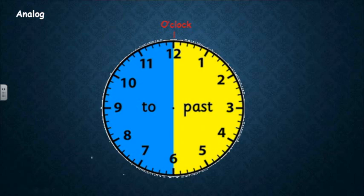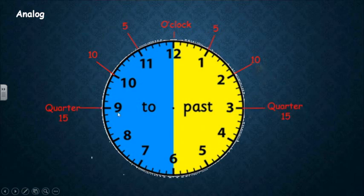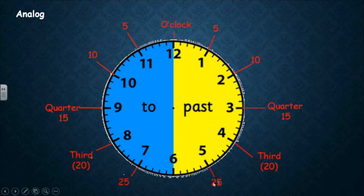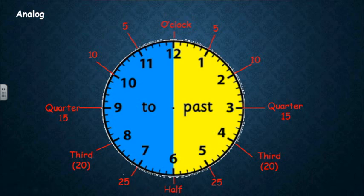Minutes in the analog clock looks like a mirror. The minutes on one and eleven is five minutes. The minutes on two and ten is ten minutes. The minutes on three and nine is a quarter, or fifteen minutes. The minutes on four and eight is a third, or twenty. The minutes on five and seven is twenty-five minutes. And the minutes on six is called half. The rest of the minutes looks like a mirror.